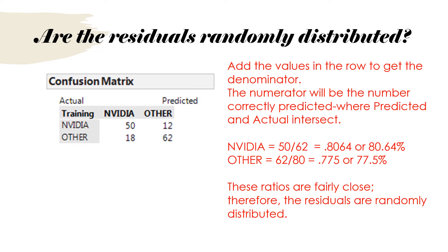Now we want to see if the residuals are randomly distributed. So you're going to look at the confusion matrix, and you're going to add a cross. So for NVIDIA, 50 plus 12 is going to equal 62. That's the denominator. Then I want to know, of the ones predicted that were actually NVIDIA, there were 50 that were correct. That's the numerator. 50 out of 62 gives us .8064.